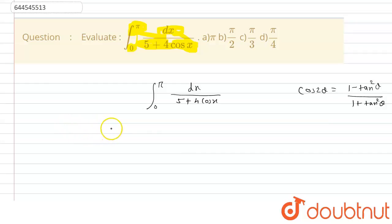So this will be integral of 0 to pi dx upon 5 plus 4 multiply by 1 minus tan square x by 2 upon 1 plus tan square x by 2. Because we have 2 theta is equals to x, so theta will be x by 2.